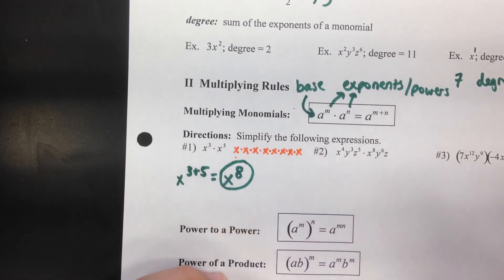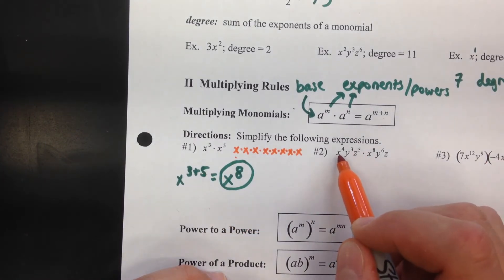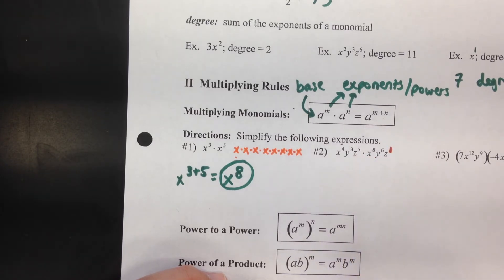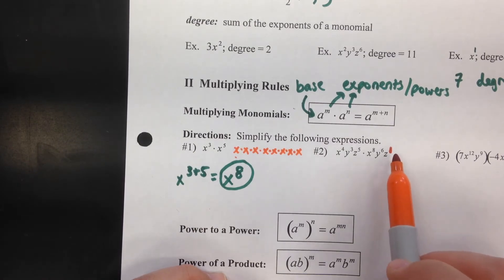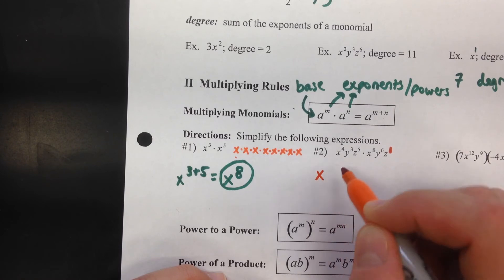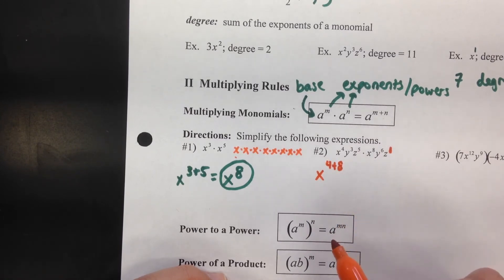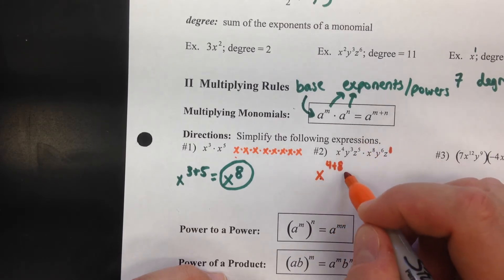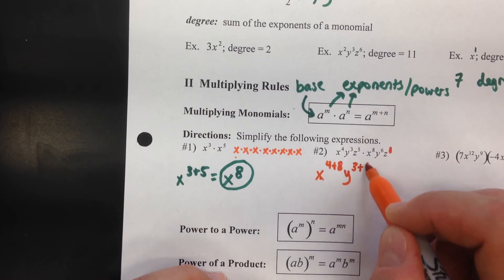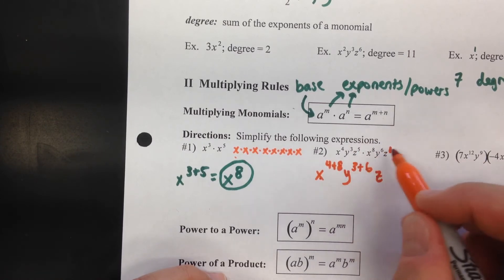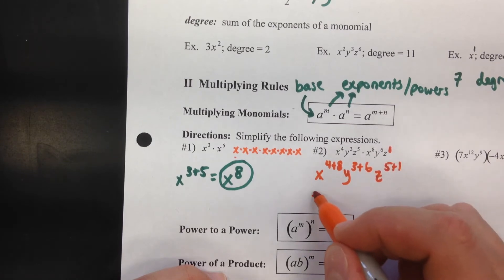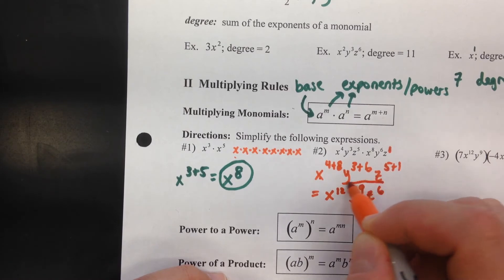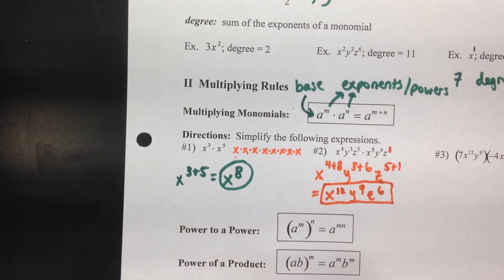For example 2: x to the fourth y to the third z to the fifth times x to the eighth y to the sixth z to the first. Put the 1 in there to remind yourself there is an exponent. Add the exponents for each matching variable: x to the 4 plus 8, y to the 3 plus 6, z to the 5 plus 1. Simplified: x to the twelfth, y to the ninth, z to the sixth.